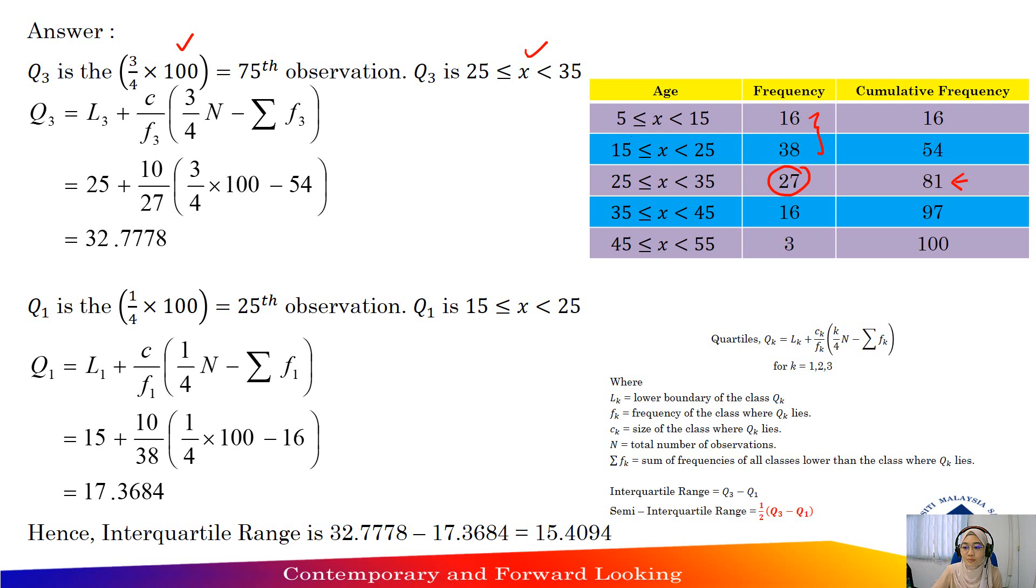And for first quartile is one-quarter times 100 and located at 25th observation. So 25th observation here, x greater than or equal to 15, less than 25. The class interval. So refer to this class interval to find the Q1.